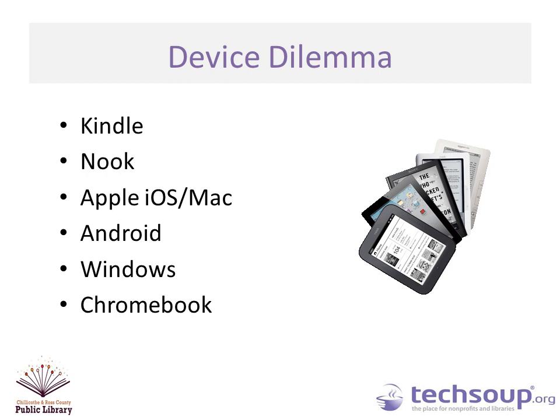If someone walks in with a tablet you don't recognize but you see the word Acer stamped on it, a good place to start is the manufacturer's website — for example, Amazon.com for a Kindle or the Acer website for that tablet. When you look up an Acer tablet online, you'll find they all run on Android, so it's going to work like any other Android device.